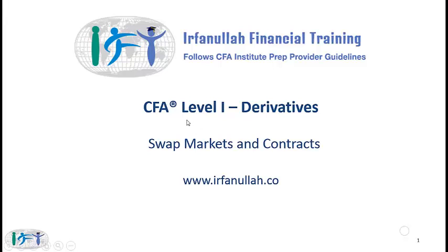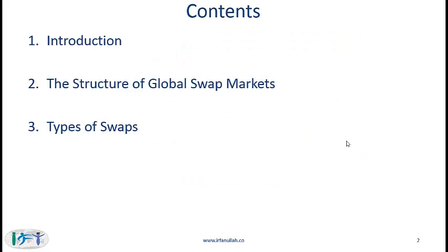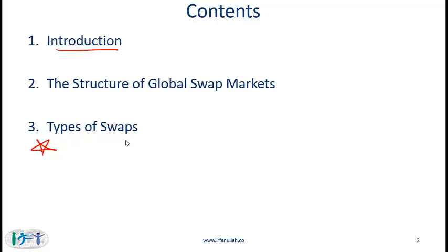In this lecture we will go over the CFA Level 1 reading on swap markets and contracts. This is a relatively short reading. In the introduction we will talk about the basics of swaps. Section 2 deals with the structure of global swap markets, which will look familiar because it is quite similar to the reading on forward contracts. The bulk of the reading is covered in section 3, where we will talk about different types of swaps.